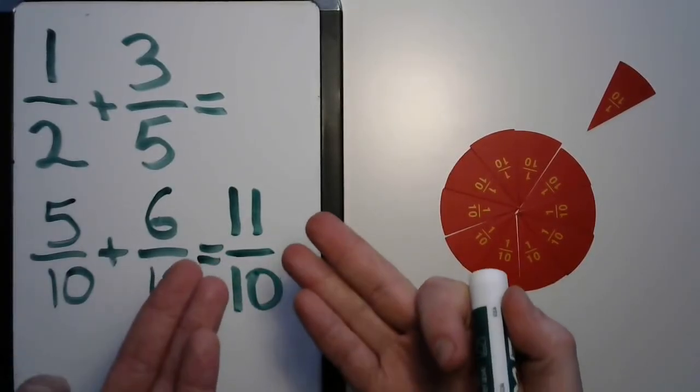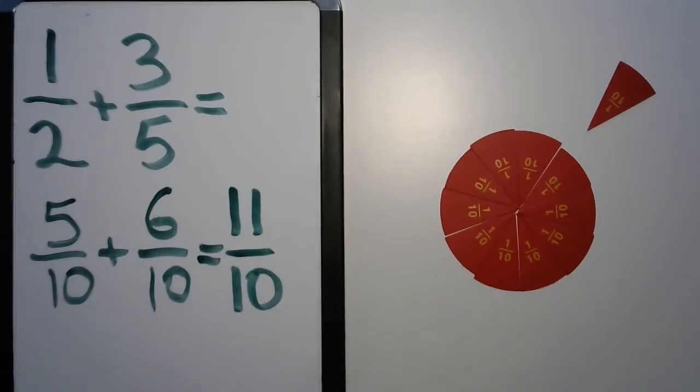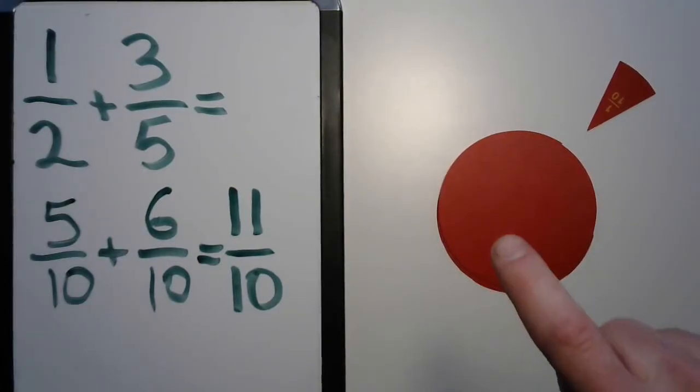This is what we call an improper fraction. Its head is so heavy it might fall over. But that's okay. We can change it to a mixed fraction using our amazing understanding of equivalency. What do you see now?